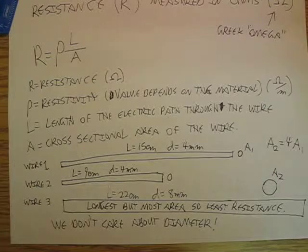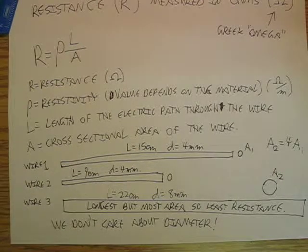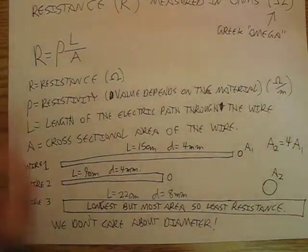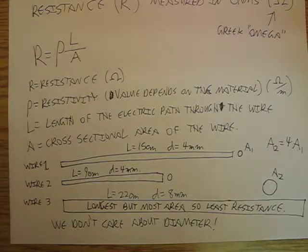So fatter wires are going to have lower resistance. Thinner wires are going to have more resistance. So light bulbs have really thin wires if you're still using incandescent light bulbs.